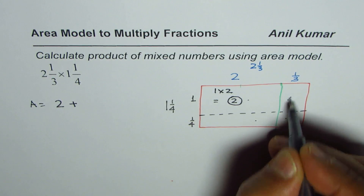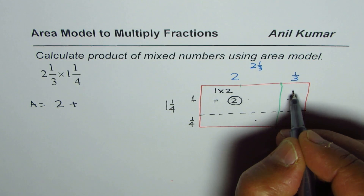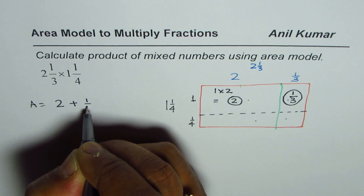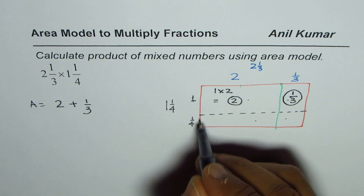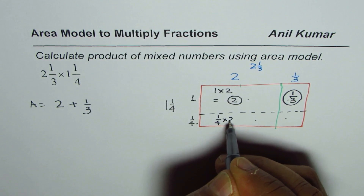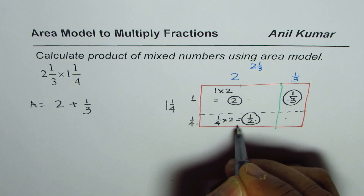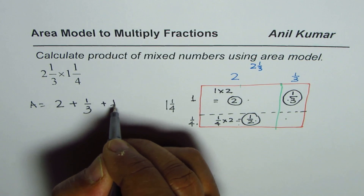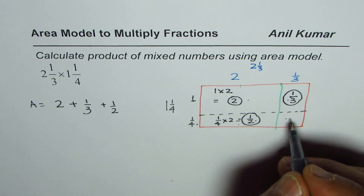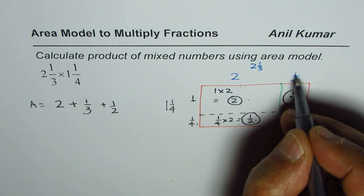The next rectangle has area 1 times 1/3, which is 1/3. Then the area of the bottom-left rectangle is 1/4 times 2, which equals 1/2. And the last small rectangle is 1/4 times 1/3, giving 1/12.